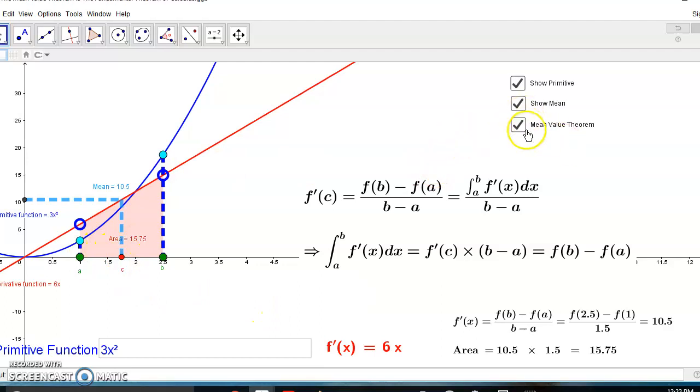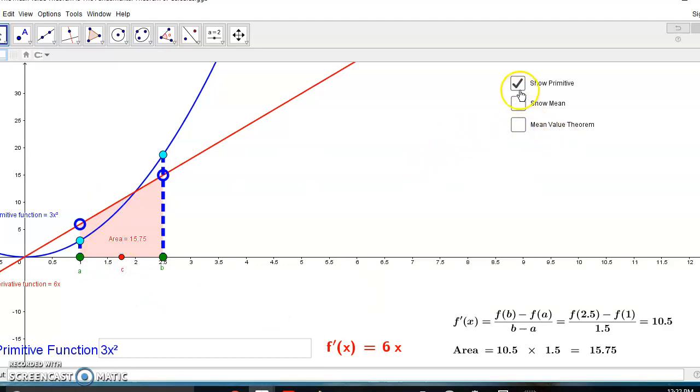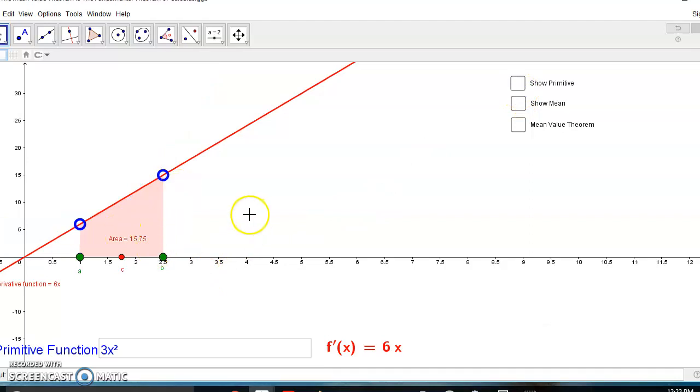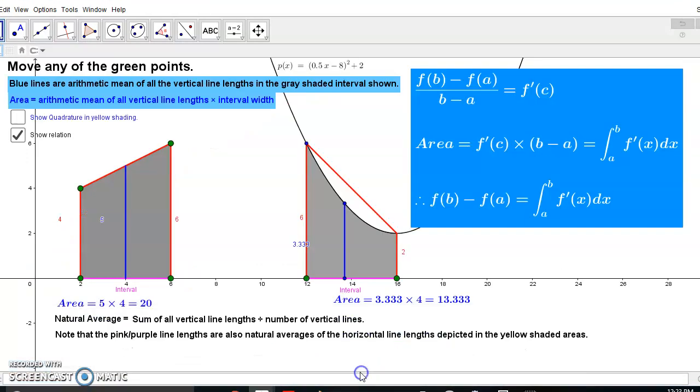So, really, what are you doing when you're finding the area? Well, the new calculus states that the area is given by the product of the arithmetic means. In other words, the arithmetic mean of all these vertical lines multiplied by the arithmetic mean of the horizontal lines which actually turns out to be the interval width. So, if I have to show you the quadrature, this here is the arithmetic mean.